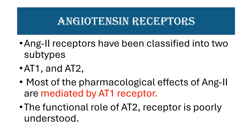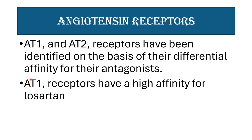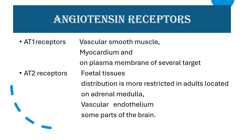Angiotensin acts on angiotensin receptors, which are classified into two subtypes: angiotensin 1 (AT1) and angiotensin 2 (AT2) receptors. Most pharmacological actions of angiotensin 2 are mediated through AT1 receptors. The functional role of AT2 receptors is poorly understood. AT1 receptors have high affinity toward losartan. AT1 receptors are present on vascular smooth muscle, myocardium, and plasma membranes of several target cells. AT2 receptors are present on fetal tissue and, more restrictedly in adults, on adrenal medulla, vascular endothelium, and some parts of the brain.